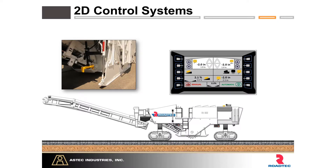We'll define what we mean by grade and slope control systems because these can vary pretty drastically. The most basic would be your 2D control system, which you see on most machines out in the field. 2D control systems use sensors — either wire rope sensors on the end gates on older machines, or newer machines have sensors in the hydraulic cylinder that lifts and lowers the end gates.